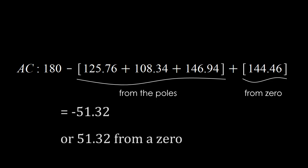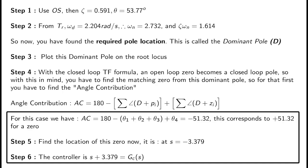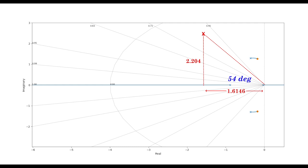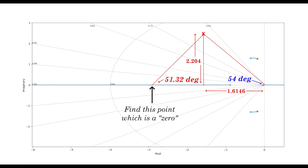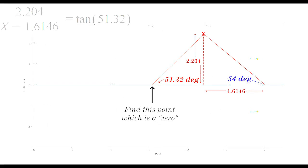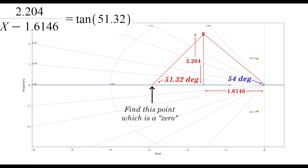You will get a value of negative 51.32 degrees. Since it is negative, it actually corresponds to plus 51.32 degrees from a zero. Once you have that angle, you use the dominant pole location together with that angle to find the zero location. The zero turns out to be at s equals negative 3.379. Essentially, you draw the angle using the known height (omega_d), then use trigonometry to find the x-axis location — the steps are shown step by step.